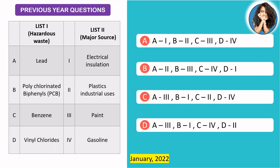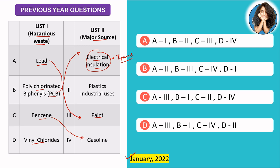The next question is a matching type: hazardous waste and its major source, asked in January 2022. First, lead — you will have heard that lead-free paints came about because paint is a major source of lead. Next is polychlorinated biphenyls (PCBs).